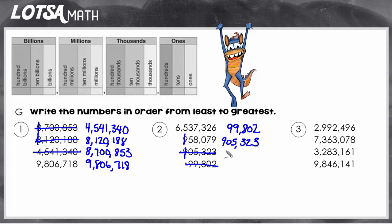So that means this one is going to be next: 958,079. And so my greatest number is going to be 6,537,326.